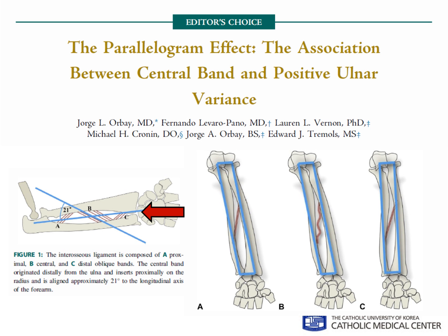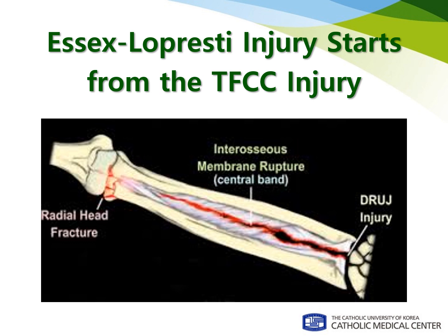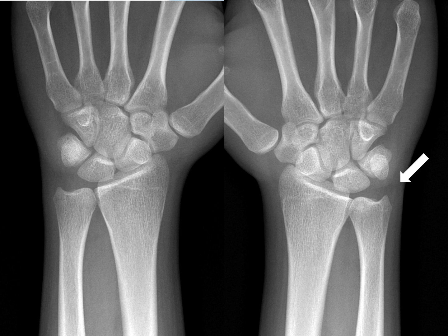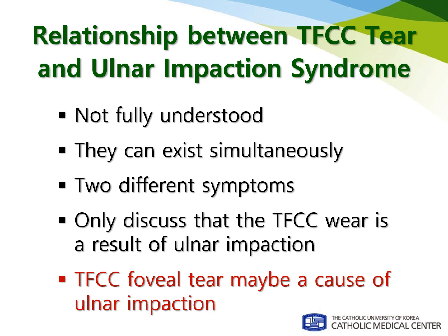The association between central band tear and positive ulnar variants was well documented by Dr. George Obey with the parallelogram effect. But I strongly believe that the TFCC injury comes first before the central band is torn. I always found that patients with a TFCC tear have more positive ulnar variance on the injured side rather than the unaffected side. However, the relationship between TFCC tear and ulnar impaction has not been fully understood. We only discussed that TFCC tear is a result of ulnar impaction, but I think TFCC foveal tear may be a cause of ulnar impaction.